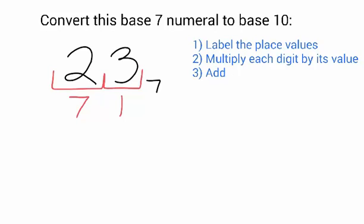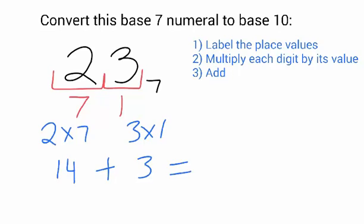Next what I'm going to do is multiply each digit by its value. So that 2 is in the 7's column, so it's worth 2 times 7, which is 14. And that 3 is in the ones column, so it's worth 3 times 1, which is just 3. So the 2 is worth 14, and the 3 is worth 3. I add them up together, and 14 plus 3 is equal to 17.